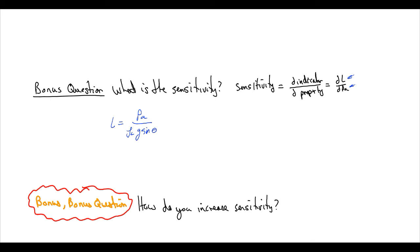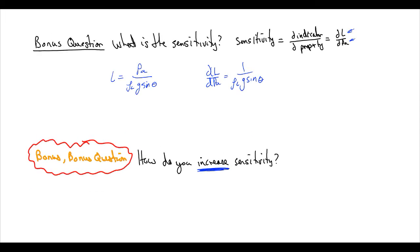And then we take the derivative of it. DL DPA is equal to 1 over rho L G sine theta. So here's a bonus question, and I want you to think about this for a long time. How would you increase the sensitivity? So this is equal to the sensitivity.